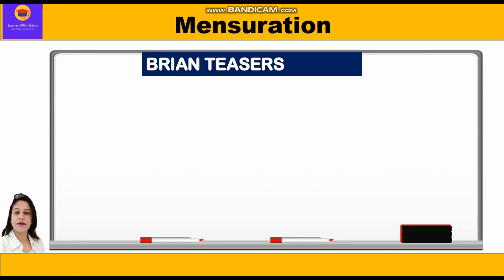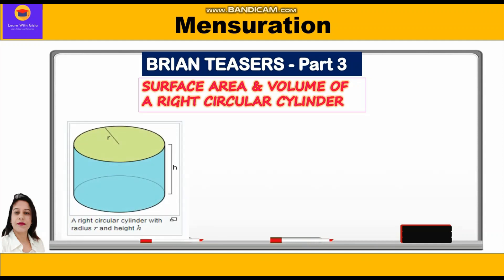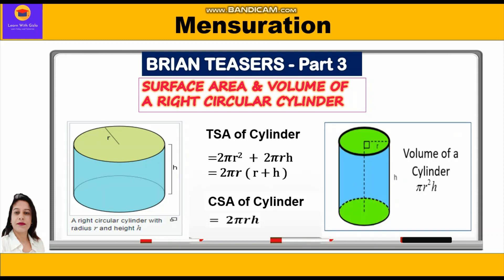In this video on mensuration, we shall take a few very important questions related to surface area and volume of a right circular cylinder. Before starting with the questions, let us first revise the formulas. Total surface area of a cylinder is equal to 2πr² + 2πrh, or taking 2πr common: 2πr(r + h). Curved surface area of a cylinder is equal to 2πrh, or circumference of the base into height. Volume of a cylinder is equal to πr²h, or area of the base into height.